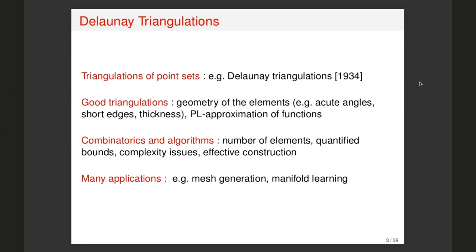There is also a more geometric side, where Delaunay triangulations play a major role. Delaunay triangulations were invented by Delaunay in 1934 and have since been widely used in computational geometry. The questions there are: how to construct good triangulations with nice elements — good angles, short edges, thickness — and this is also related to approximation of functions. Can we define a triangulation with good approximation properties? There is also the combinatorial and algorithmic side: how many simplices are in the Delaunay triangulation of n points, and what is the complexity of the algorithms?